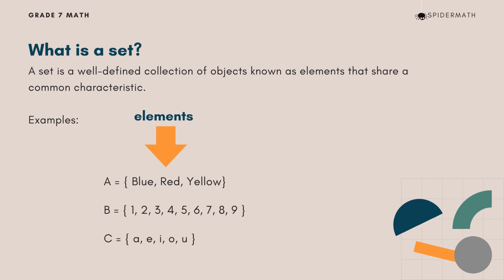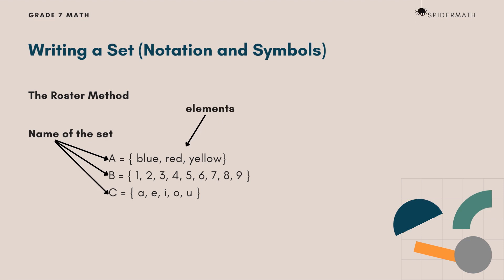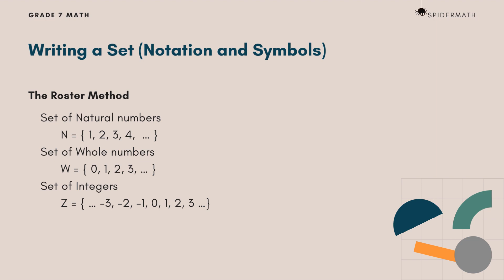Let us continue to the notation and symbols used in writing sets. Uppercase letters are used to name sets, and lowercase letters are usually used to refer to any element of a set. The elements are separated by commas. This method of writing sets is called the roster method. If the list is too long and there is a pattern to the elements, we write down enough members so that the pattern is clear, then we put ellipses to show the continuing pattern.